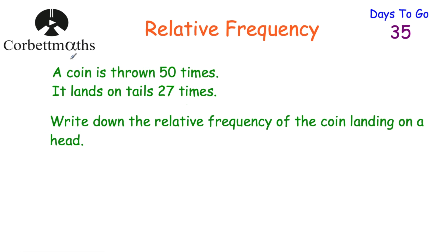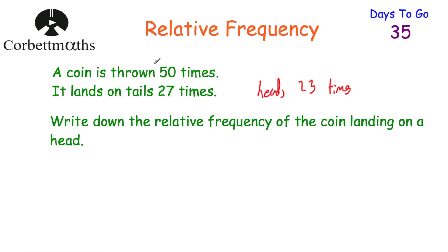Our next question says: a coin is thrown 50 times and it lands on tails 27 times. Write down the relative frequency of the coin landing on a head. So if the coin is thrown 50 times and it lands on tails 27 times, that must mean it lands on heads 23 times. So the relative frequency of the coin landing on heads is 23/50, because it lands on heads 23 out of the 50 times. This can't be cancelled down, so we're done.